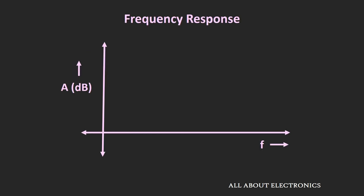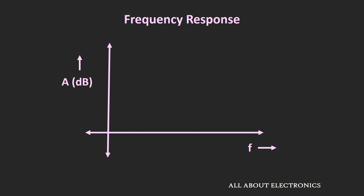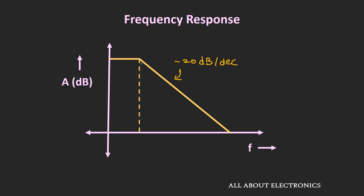So far we have assumed that the gain of the op-amp is very high and it has a very high bandwidth, and we have assumed that the gain of the op-amp is constant up to a certain band of frequencies. But if you see the actual response, the actual response of the op-amp will look like this — the gain will be constant up to certain frequencies, and if we go beyond this frequency, the gain of the op-amp will reduce at a constant rate of minus 20 dB per decade. This frequency is known as the cut-off frequency of the op-amp.